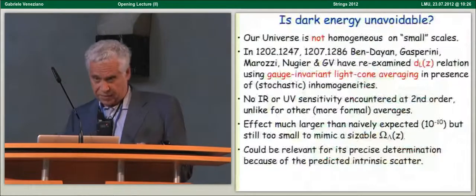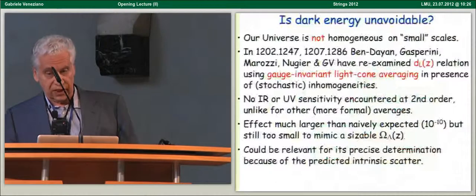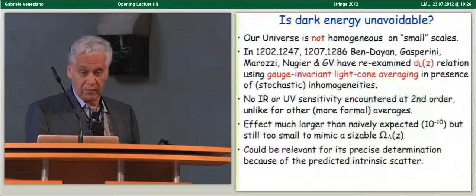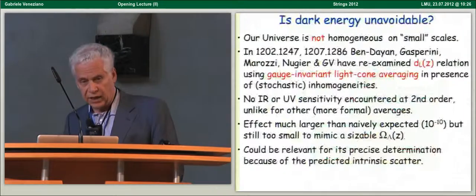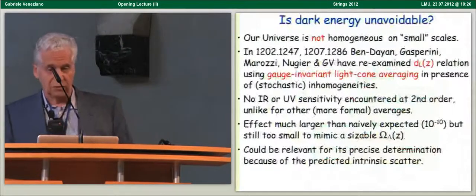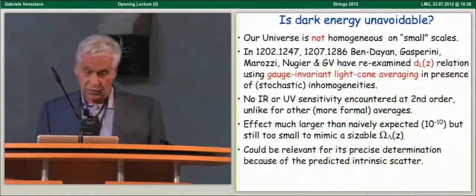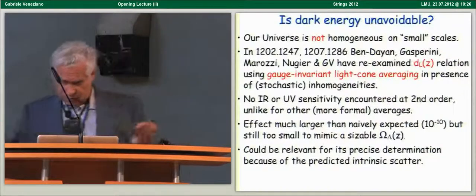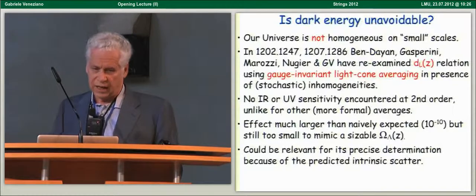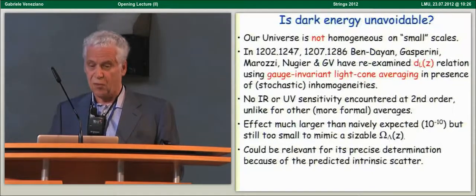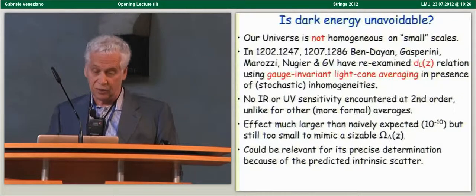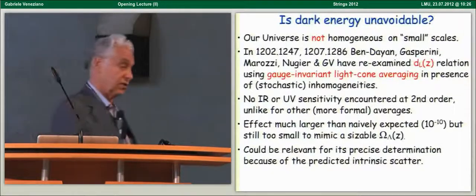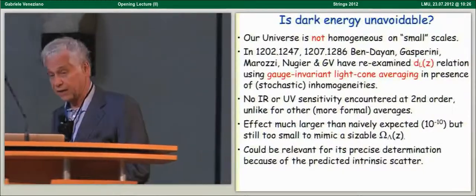And the question has been coming up whether the existence of inhomogeneities in the universe could explain away the acceleration without need for dark energy. So we took this suggestion quite seriously, and a group of people. We have re-examined this famous luminosity distance versus redshift relation, which is the way you see acceleration through the supernovae, and we did that by using some gauge invariant light cone averaging in the presence of the stochastic inhomogeneities that inflation predicts. And we found that the calculation is insensitive to infrared or ultraviolet possible divergences.